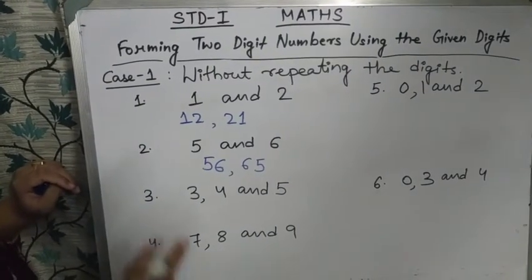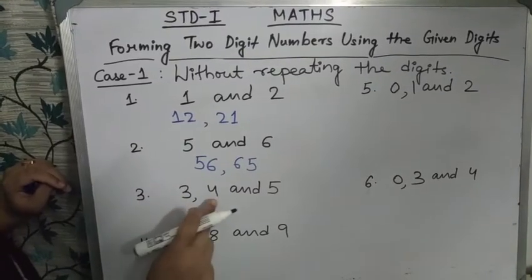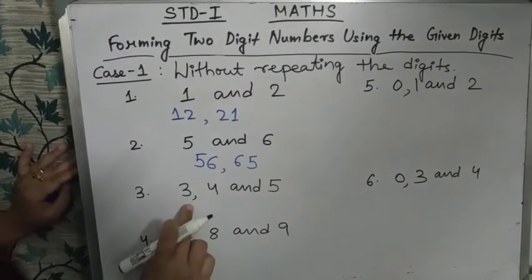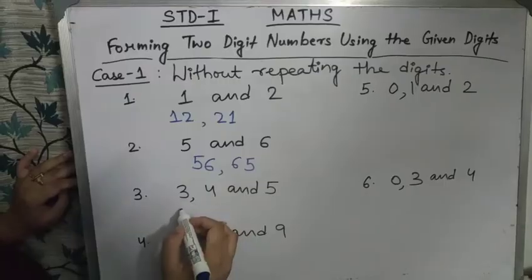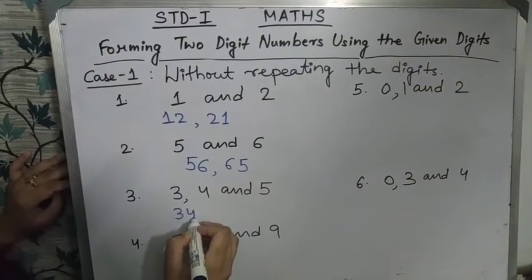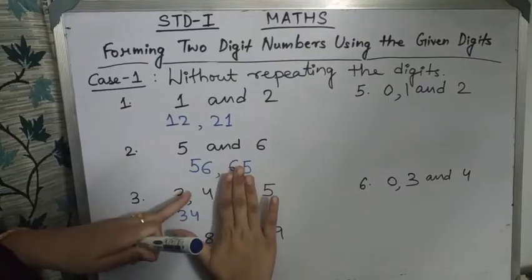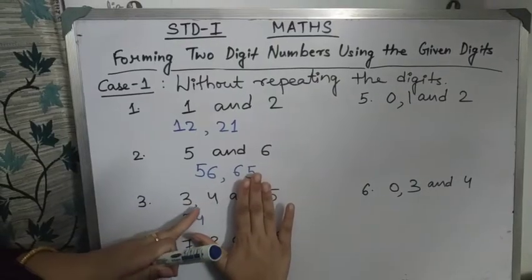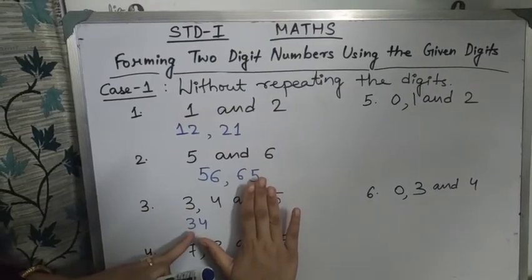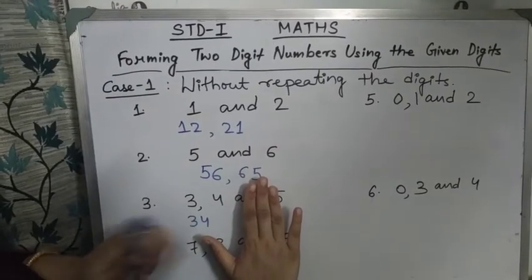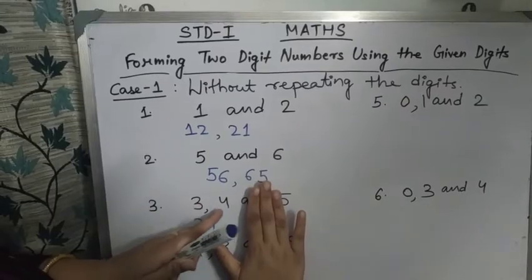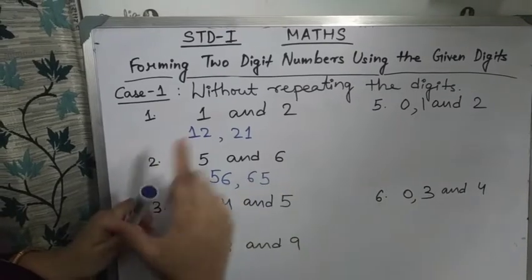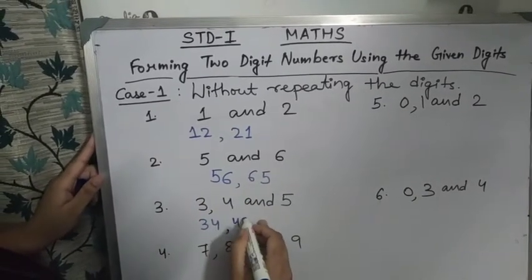Number 3 — three digits are given: 3, 4, and 5. First, take 3 and 4 and forget about 5. The first number is 3, 4 — that is 34. The second number is 4, 3 — that is 43.